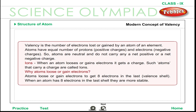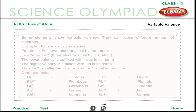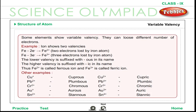The modern concept of valency defines it as the number of electrons lost or gained by an atom of an element. Atoms have equal numbers of protons (positive charges) and electrons (negative charges), so atoms are neutral. When an atom loses or gains electrons, it gets a charge — such atoms are called ions. Atoms lose or gain electrons to achieve 8 electrons in the last valence shell, making them more stable. Some elements show variable valency and can lose different numbers of electrons.